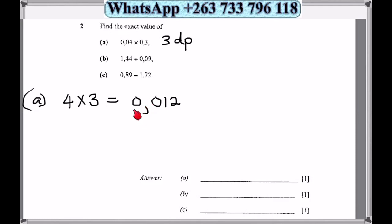Alternatively, you can turn them into fractions like this: 4 over 100 times 3 over 10. So 4 times 3 is 12, 100 times 10 is a thousand, so 12 over a thousand equals 0.012.